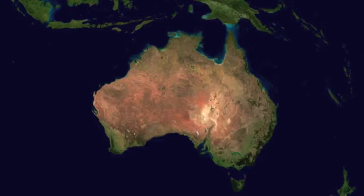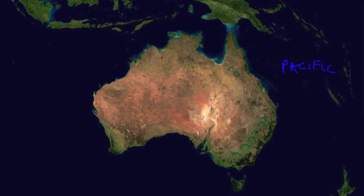The continent of Australia doesn't have any really large mountain ranges. There is a series of hills over on the east coast that provide some topographic relief. But really, this island continent is surrounded by lots of water: the Pacific Ocean to the east, the Southern Ocean to the south, and the Indian Ocean to the west. Across the top, we have the Timor Sea and the Arafura Sea, and the Gulf of Carpentaria up at the top end.